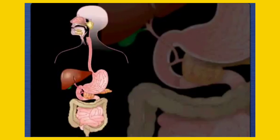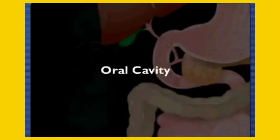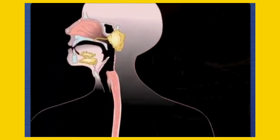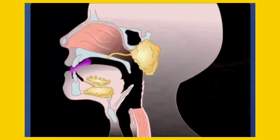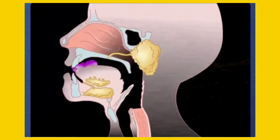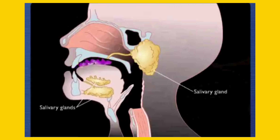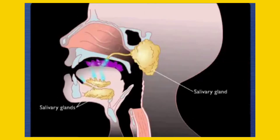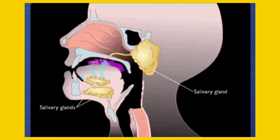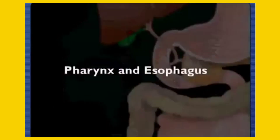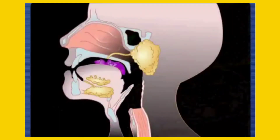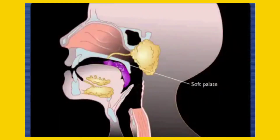The primary functions of the digestive system are the breakdown of food, called digestion, and the absorption of nutrients. Digestion begins in the mouth, where the teeth break food into smaller particles during mastication. Salivary glands located near the oral cavity secrete saliva, which begins chemical digestion and keeps the food moist.